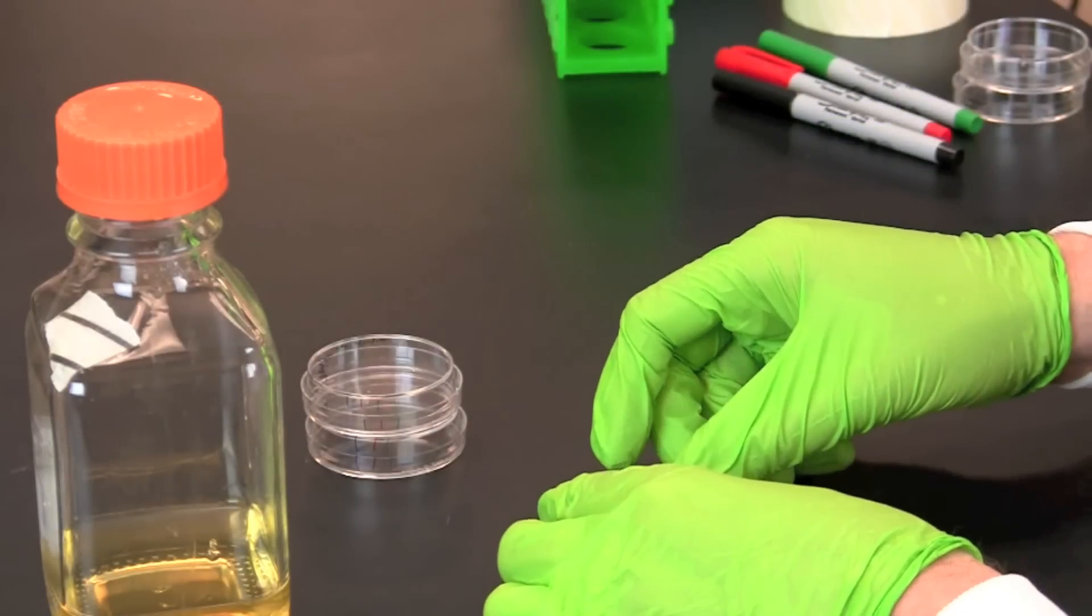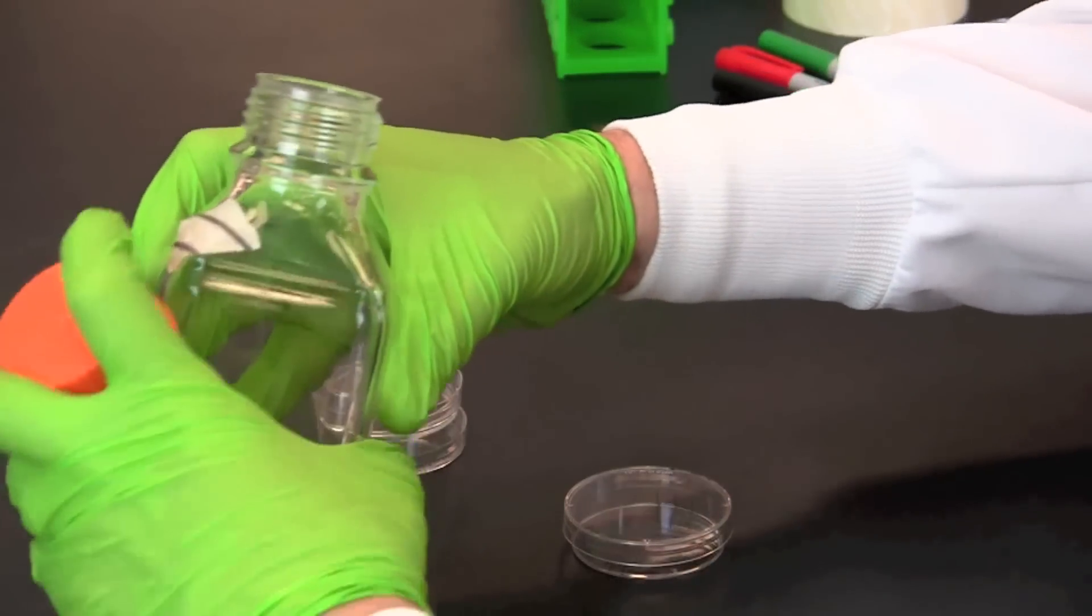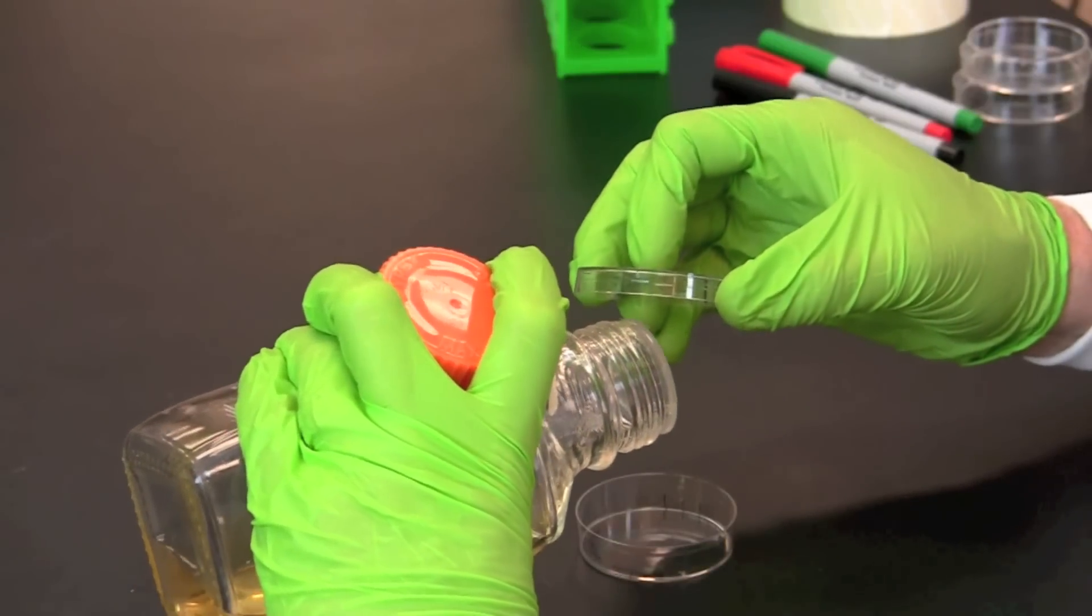To pour a plate, turn the plate with the base on the bottom. Use aseptic technique and hold the lid of the plate to shield the base against contamination while pouring the LB agar.